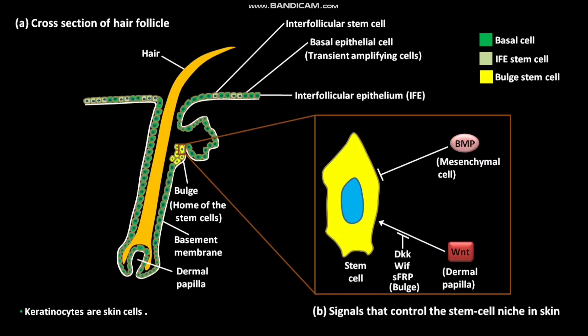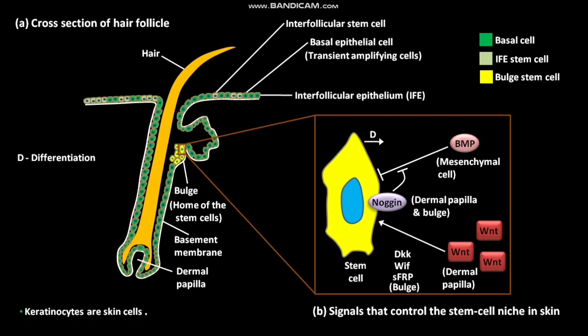During development, when new hair cells are to be grown, the dermal papilla makes noggin. Noggin blocks the BMP signal. The dermal papilla also makes more WNT, and these higher levels of WNT overcome the inhibitors of stem cell differentiation — DKK, WIF, and SFRP. As a result, stem cells undergo differentiation to produce hair cells.